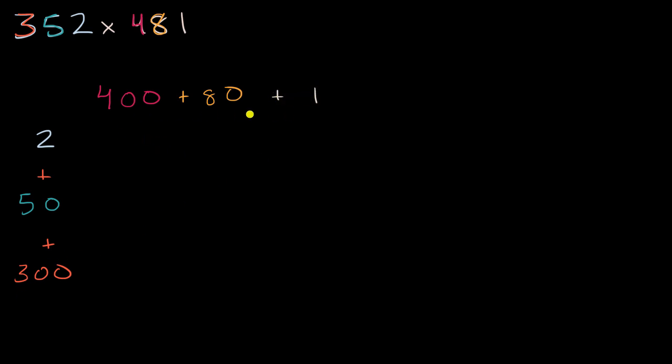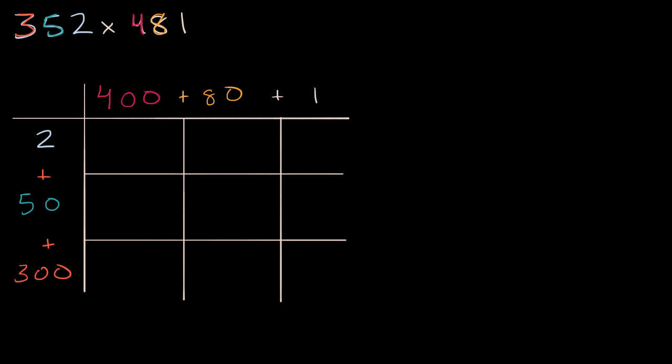And you might be familiar with multiplying like this in the past, setting up this grid, and it's essentially we're applying the distributive property. We're gonna take the 2 and multiply it times 400 plus 80 plus 1. So we're gonna multiply 2 times each of those numbers. Let me just draw some quick lines here to set up my grid.